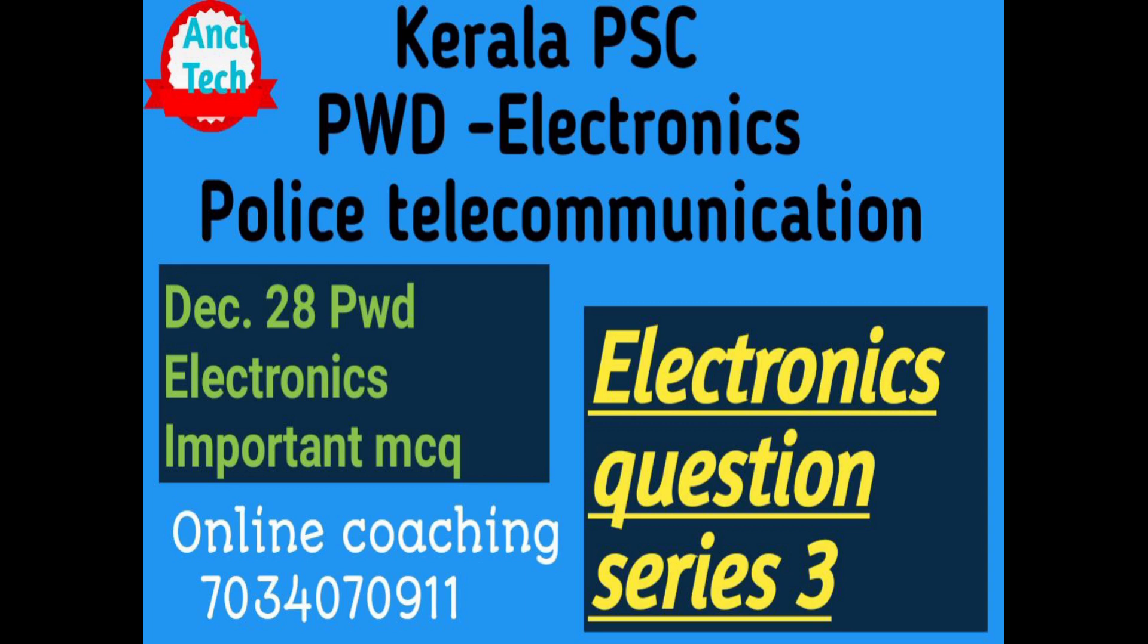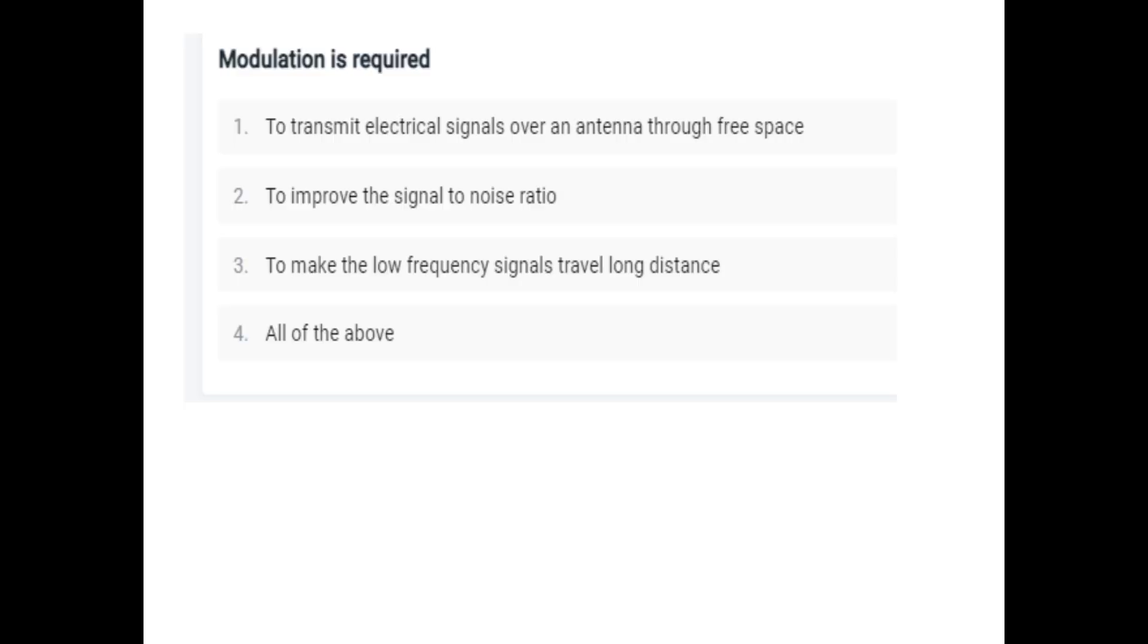Now we will discuss ten questions. We have one Electronics question series, it is the third series. I will give you the description. First question: Modulation is required to transmit electrical signals over an antenna through free space, to improve signal-to-noise ratio, to make low-frequency signals travel long distance. All of the above.